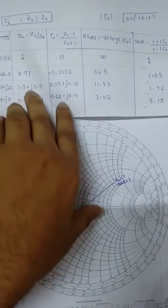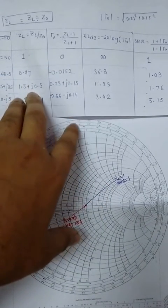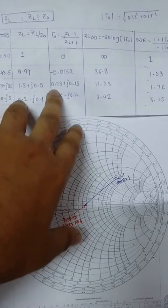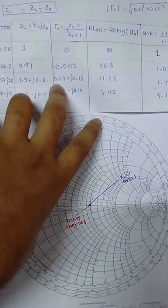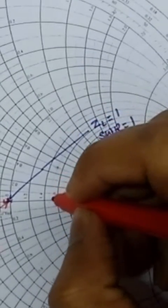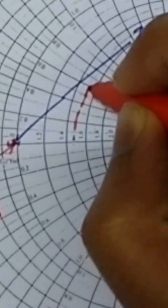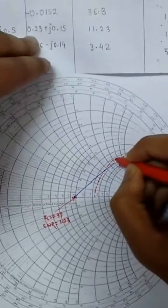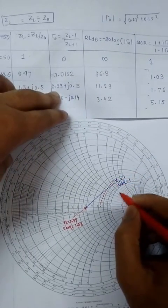After that, we have this normalized ZL of 1.5 plus j0.5. You can calculate: 1.5, between 1.4 and 1.6. And after that, you have to extend it in this way.